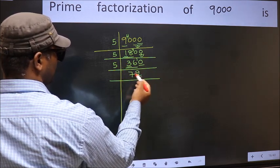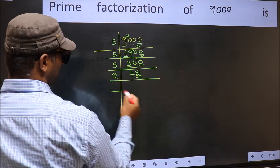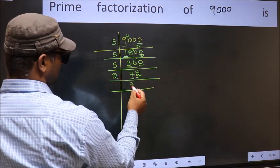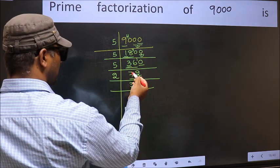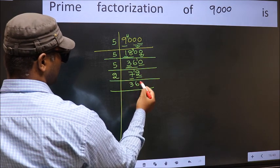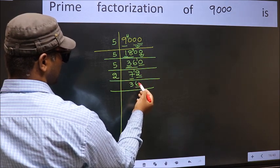Now last digit is 2, so take 2. First number 7. A number close to 7 in 2 table is 2 times 3 is 6. 7 minus 6, 1. 1 carried forward, 12. When do we get 12 in 2 table? 2 times 6 is 12. Now last digit 6.